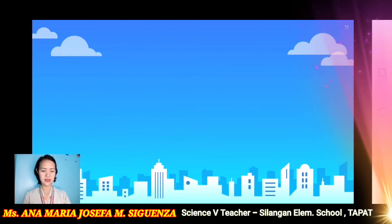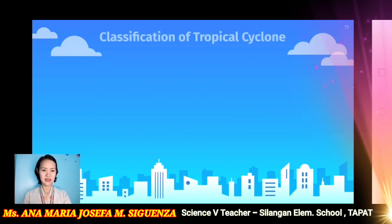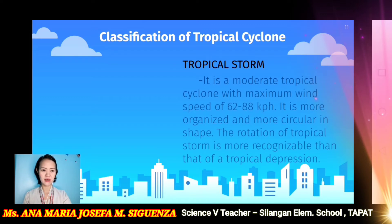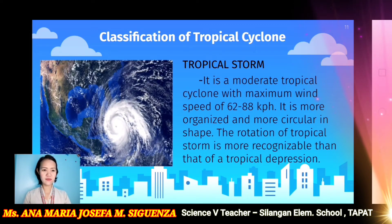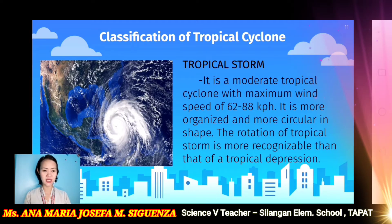The next classification is the tropical storm. It is a moderate tropical cyclone with a maximum wind speed of 62 to 88 kilometers per hour. It is more organized and more circular in shape. The rotation of a tropical storm is more recognizable than that of a tropical depression.